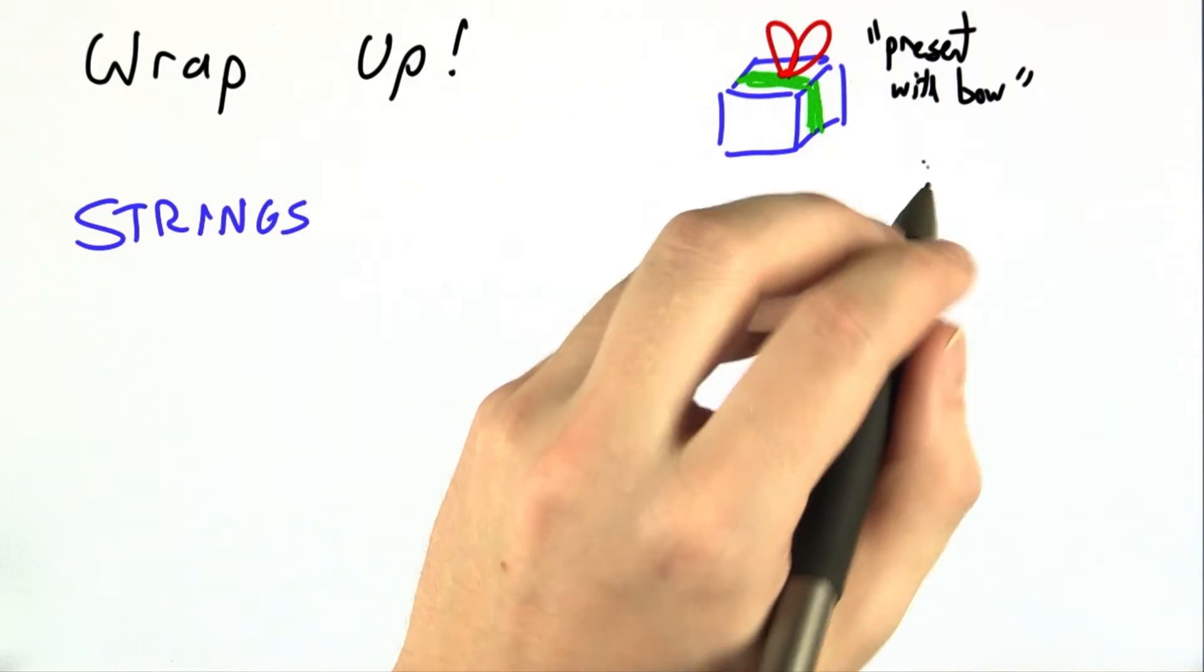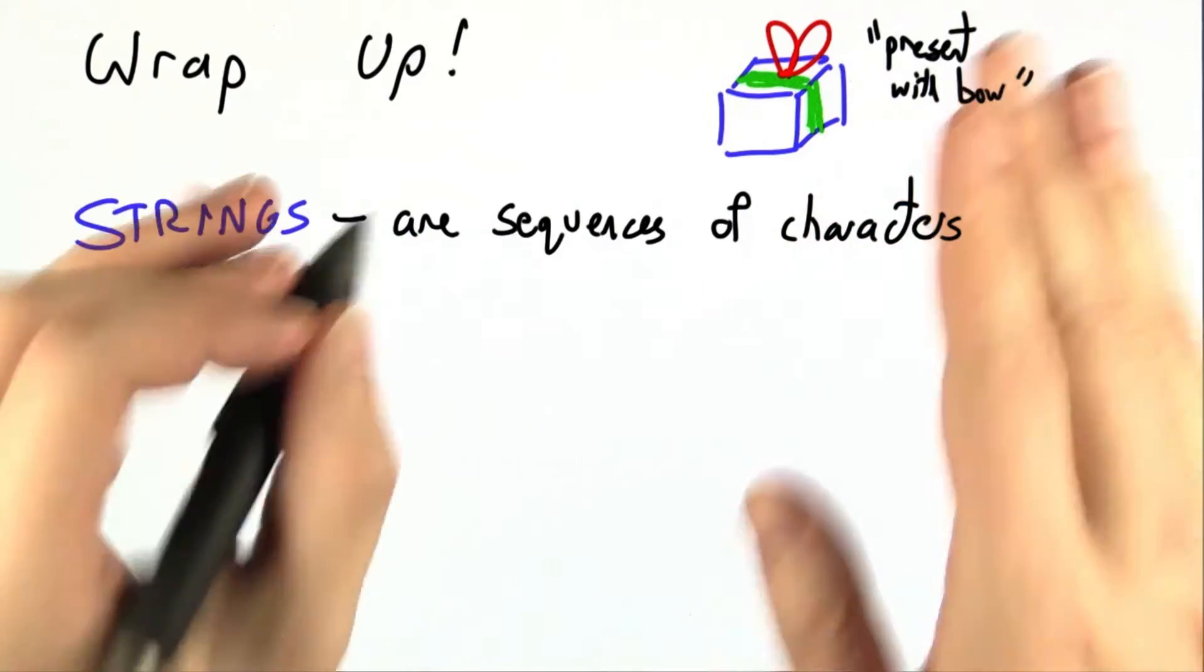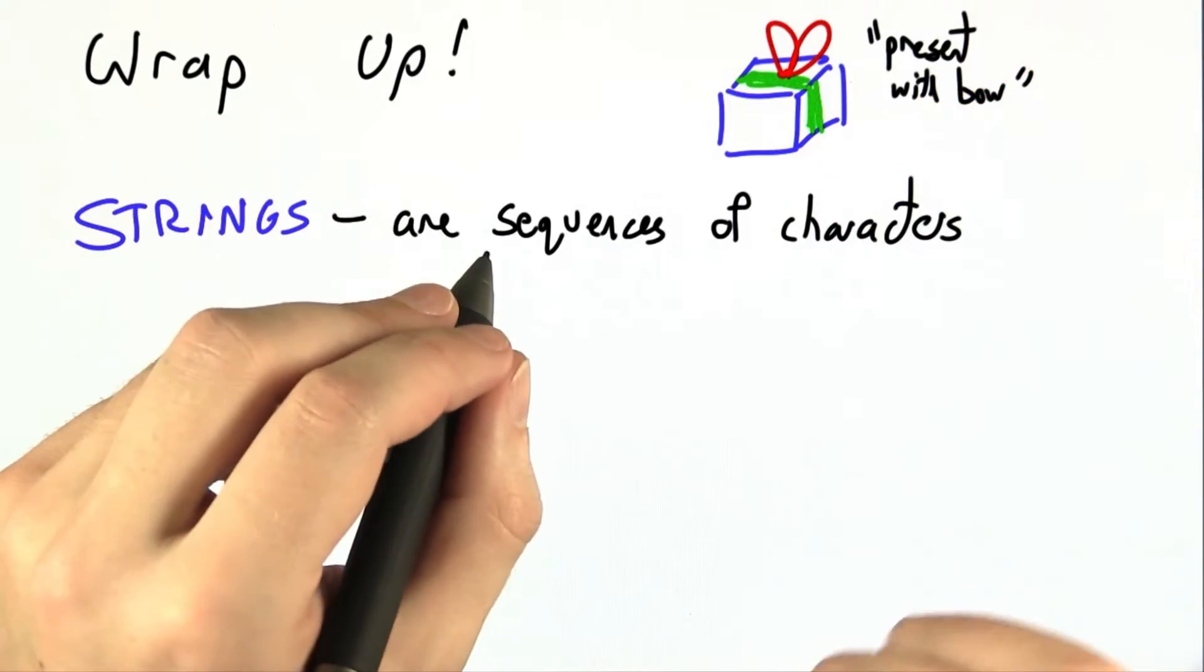So let's wrap up what we've learned in this unit. Strings are just sequences of characters, and manipulating strings is going to be critically important for making a web browser.